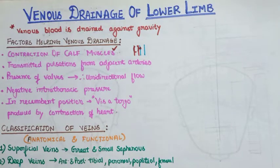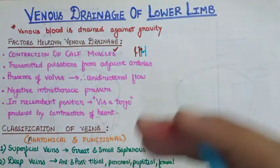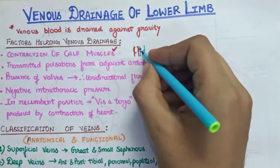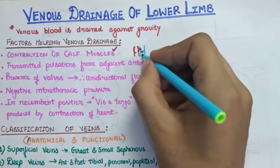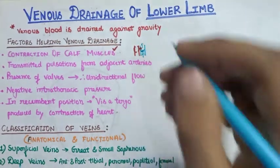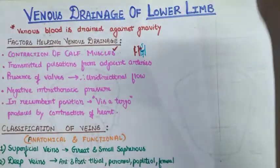The third factor is the presence of valves. A number of valves are present in the veins of the lower limb. These valves help in the unidirectional flow of blood, so the blood is always pumped upward.